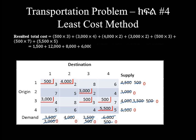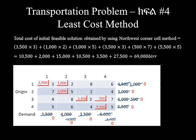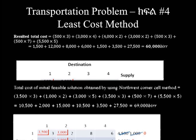As noted, this is the case of the Least-Cost-Cell method for finding the initial feasible solution. In this video, we have used the Least-Cost-Cell method to obtain the initial feasible solution for the transportation problem. The North-West Corner method is another approach to finding the initial feasible solution.